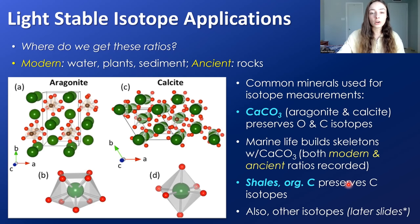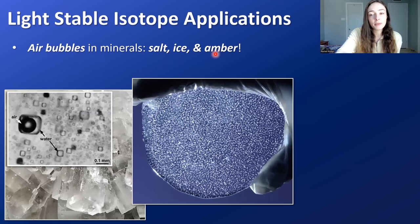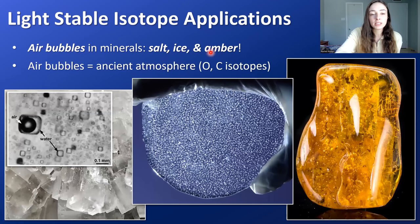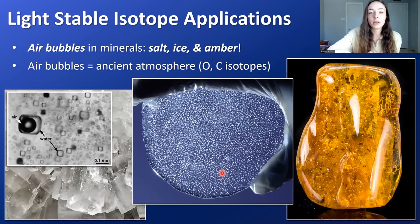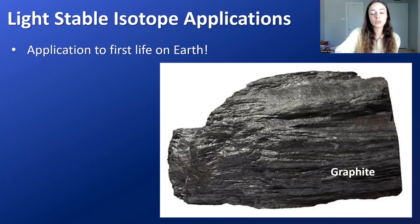Sometimes air bubbles are preserved in minerals like salt, ice, and amber, representing ancient atmosphere. If the bubble is closed off and preserved in a crystalline material, we can measure the oxygen and carbon isotope ratios within it. We can even apply stable isotope analysis to searching for the first life on Earth.